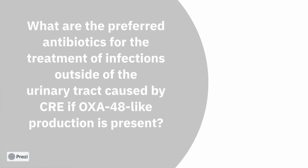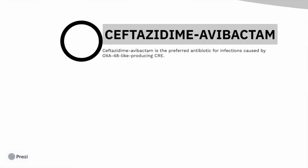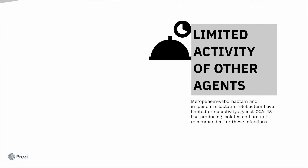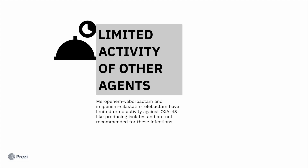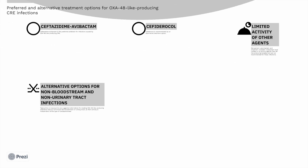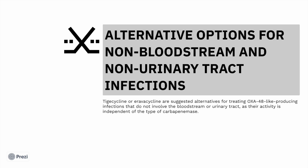For infections outside the urinary tract where OXA-48 is the producing organism, ceftazidime-avibactam is clearly the drug of choice, with cefiderocol as second. Meropenem-vaborbactam and imipenem-cilastatin-relebactam do not have activity against OXA-48 and are not recommended in these infections. Cefiderocol may be used but should be reserved. Tigecycline and eravacycline are alternatives as they can have activity against OXA-producing organisms as well.